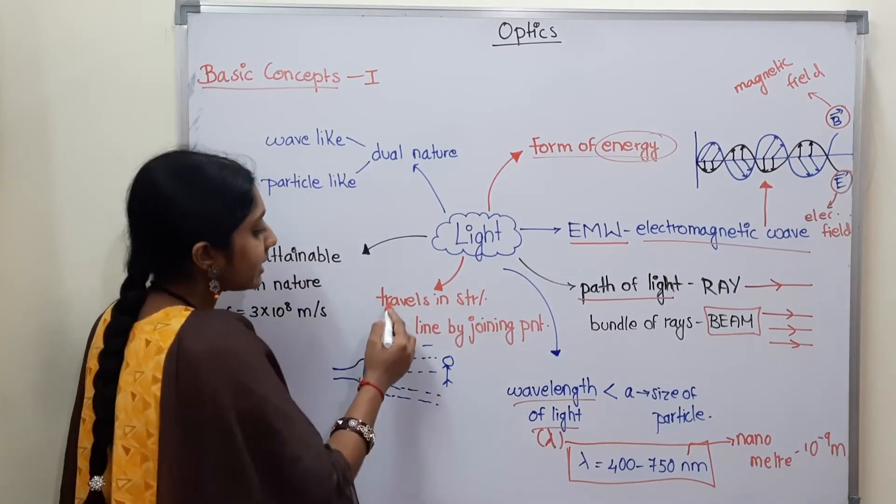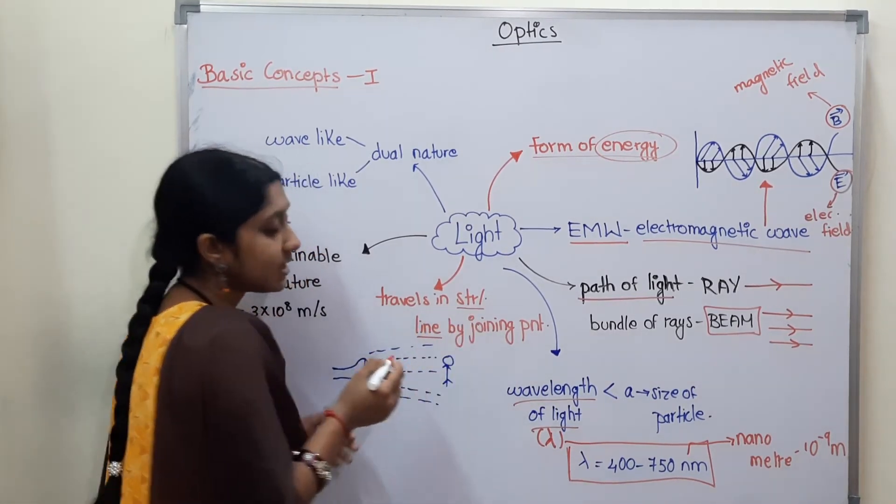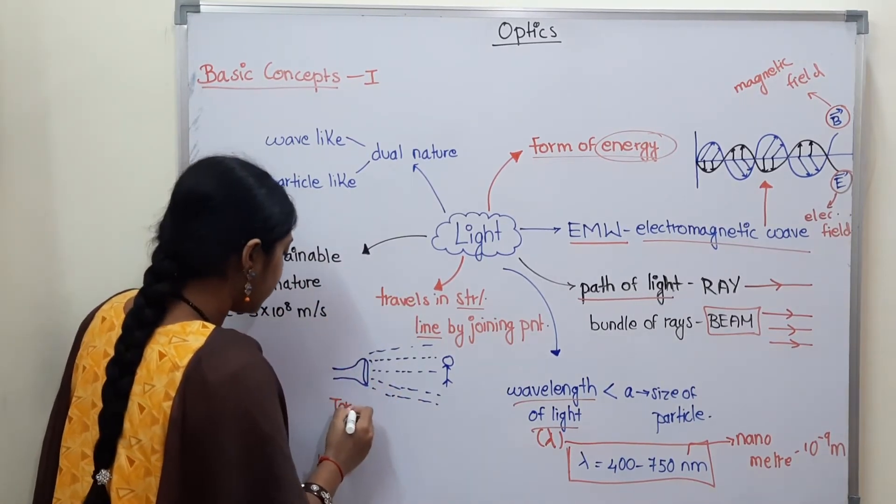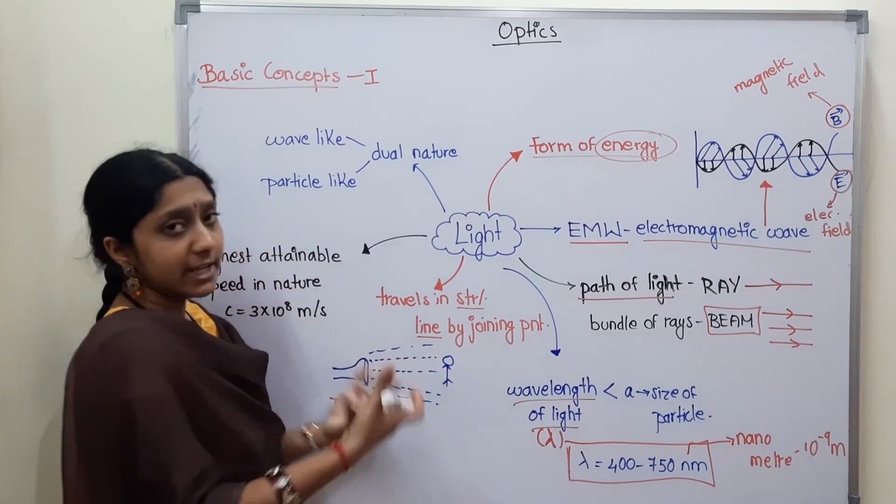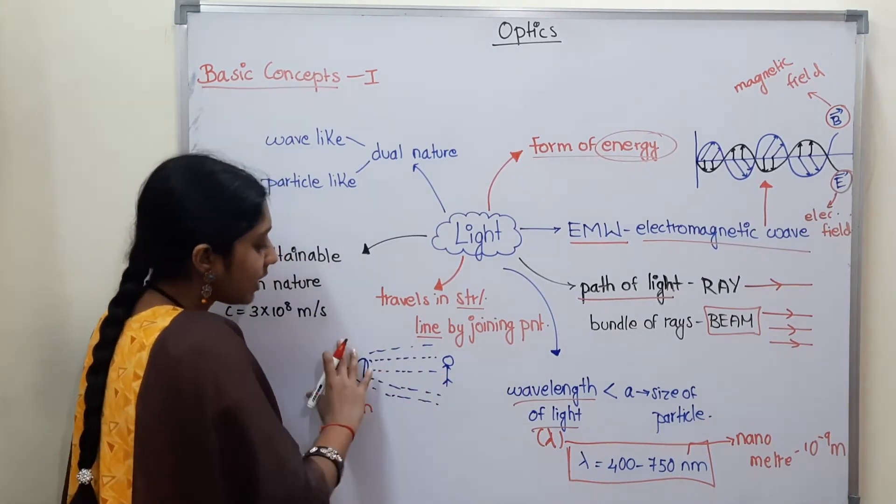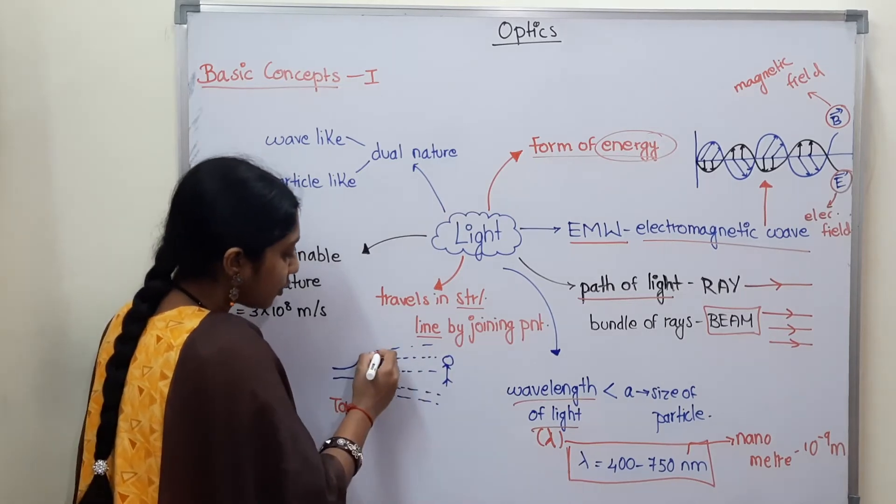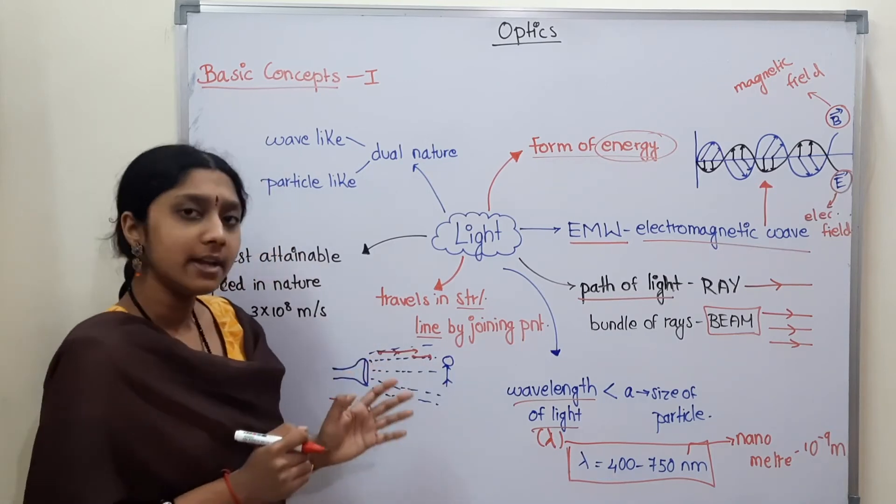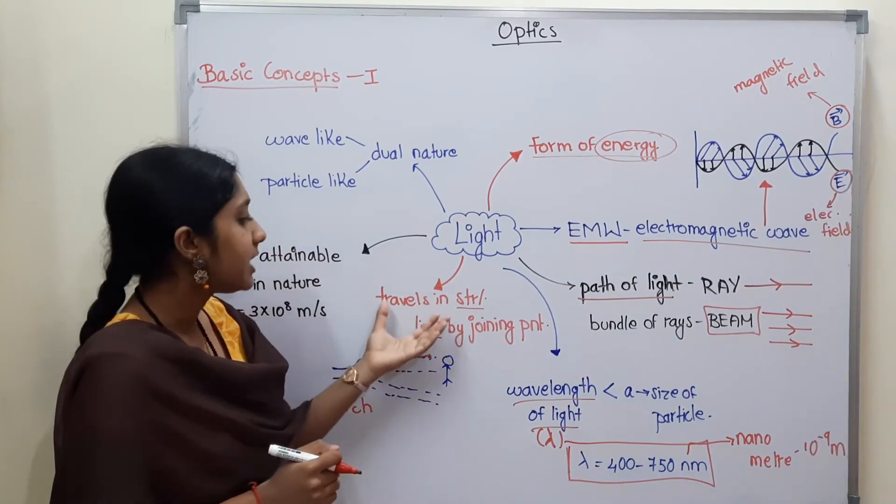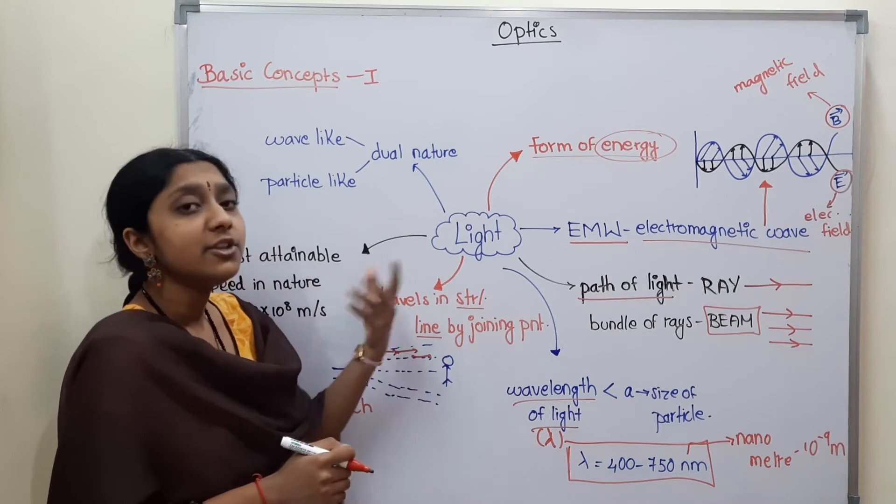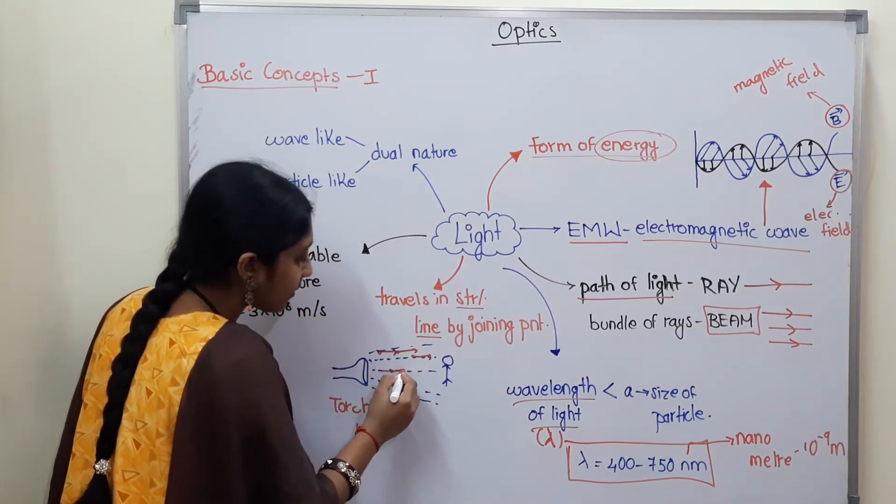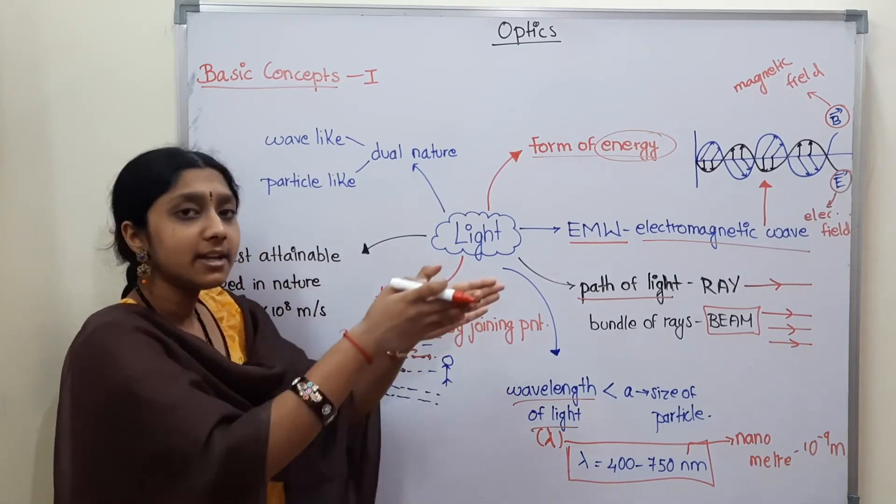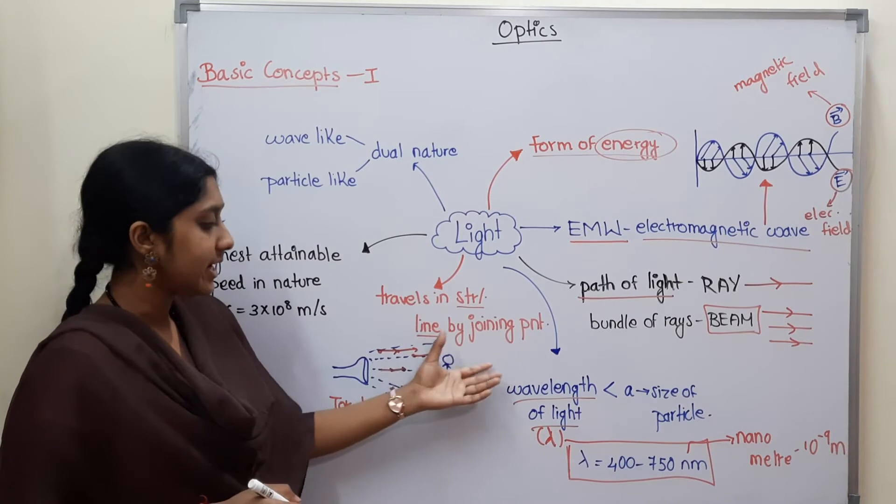travels in a straight line. Light travels in a straight line. For example, we have a torch here and we have a person or an object here. So light travels in a straight line by joining points. So this means that light travels in a straight line by joining points. So that's what we have to do next.